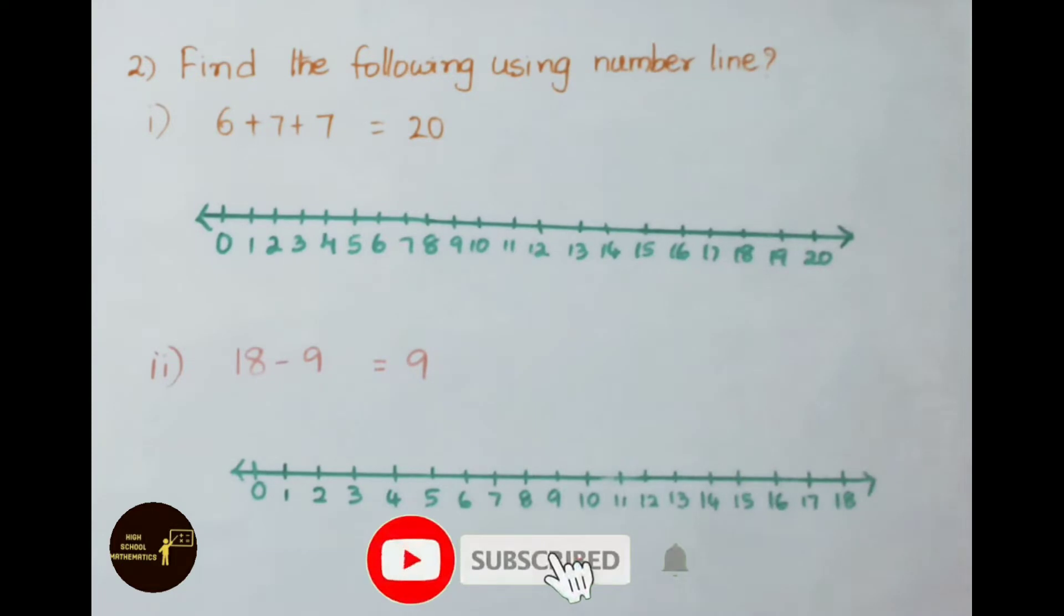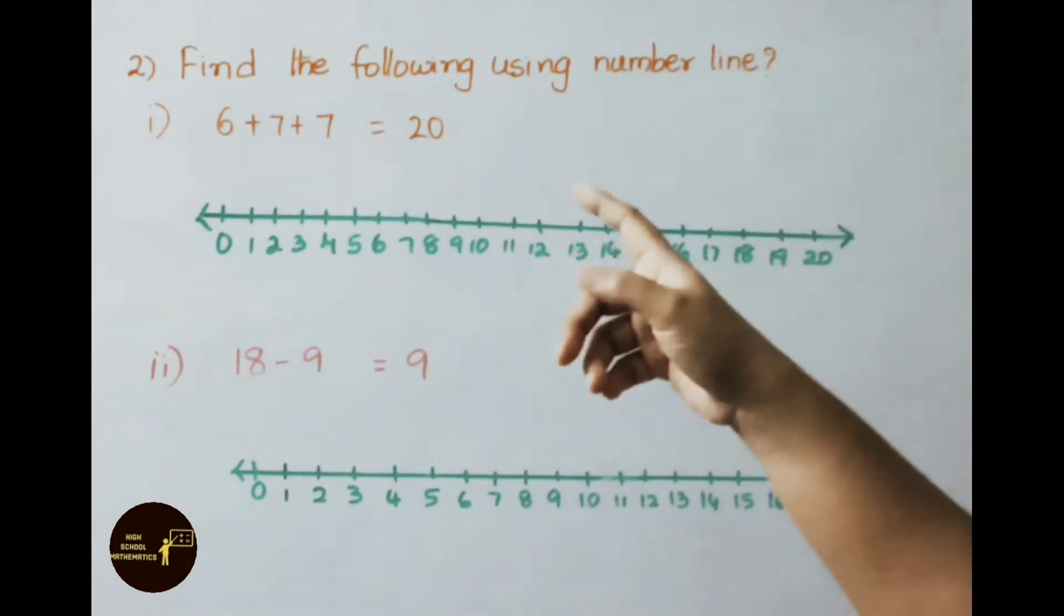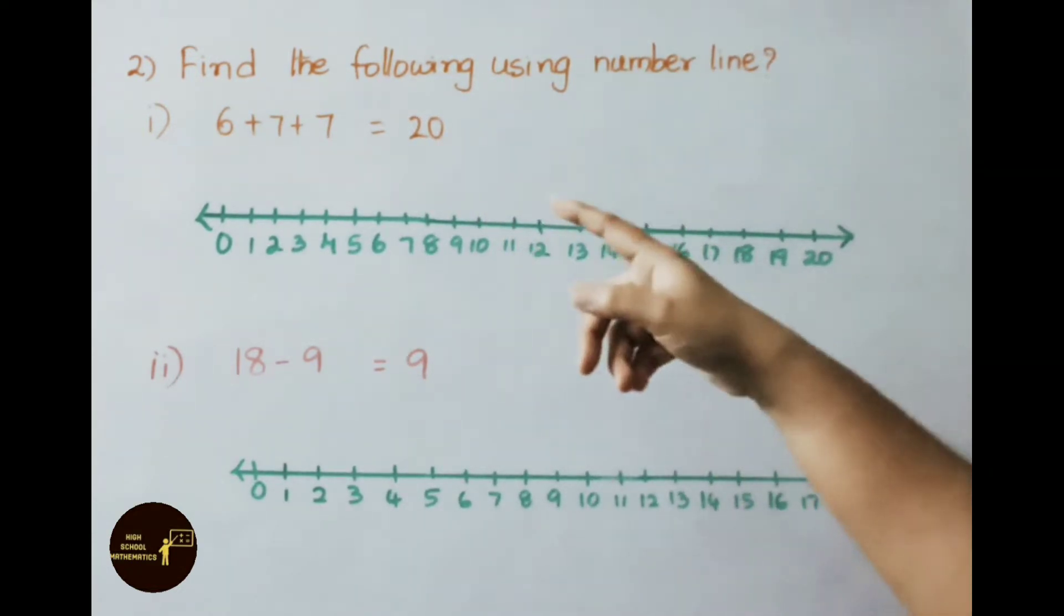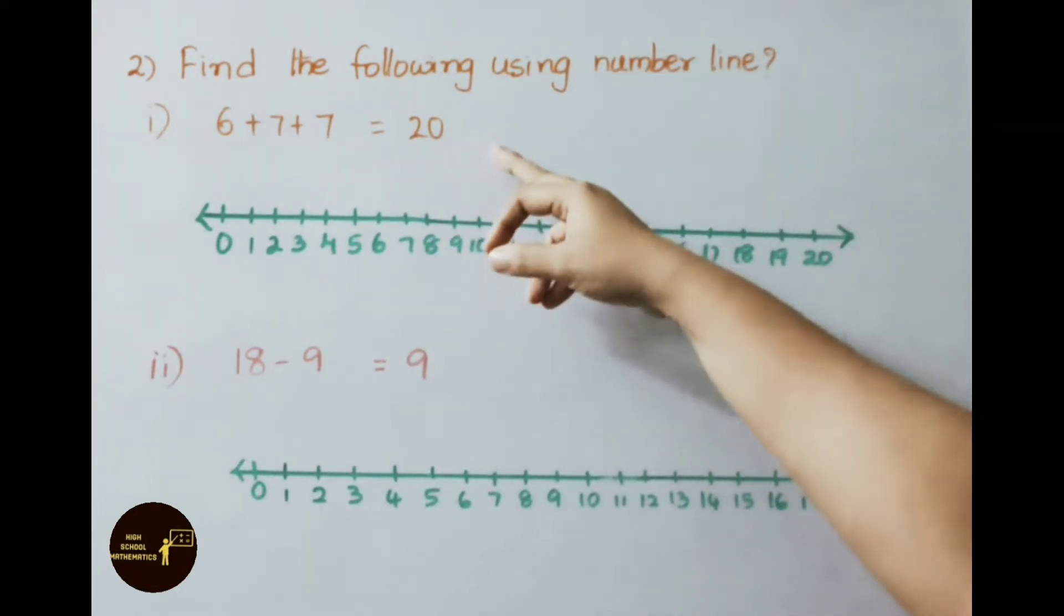See the second question now: Find the following using number line. 6 plus 7 plus 7. We shall count: 6 plus 7 is 13, 13 plus 7 equals 20. So 6 plus 7 plus 7, answer is 20. Now let us show this on the number line.